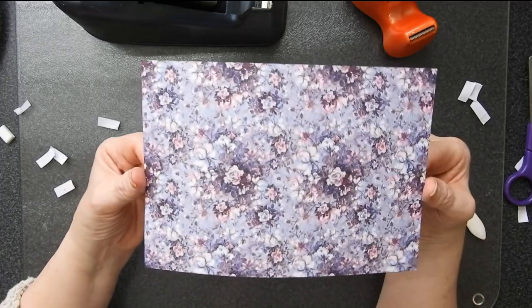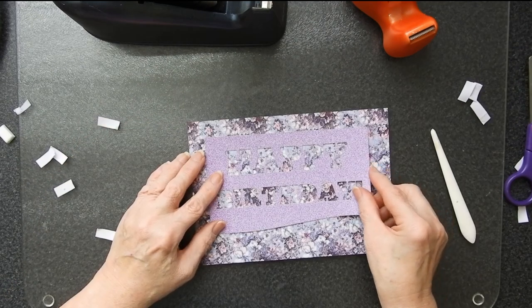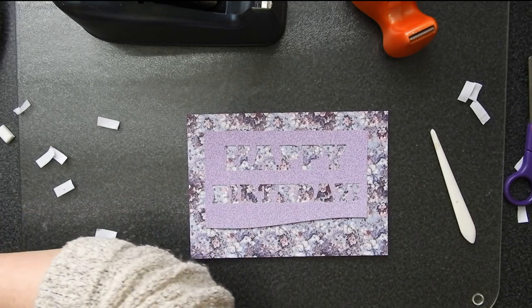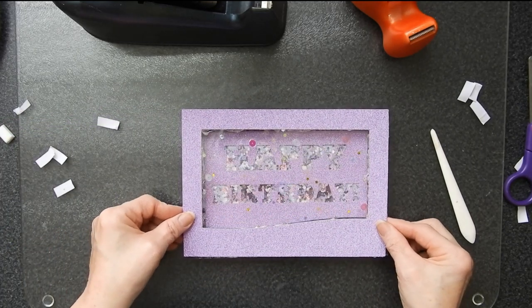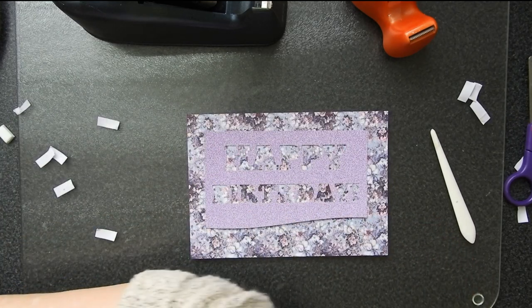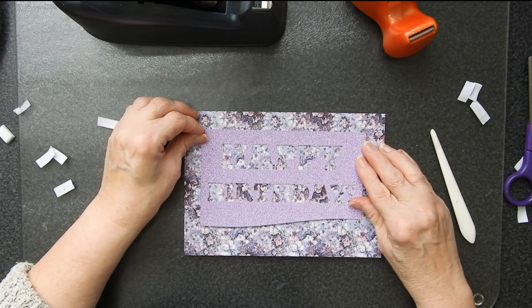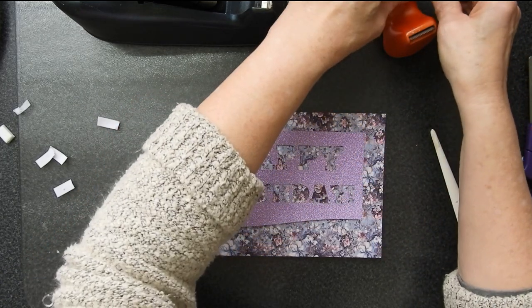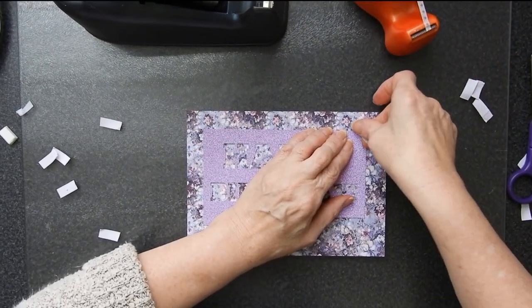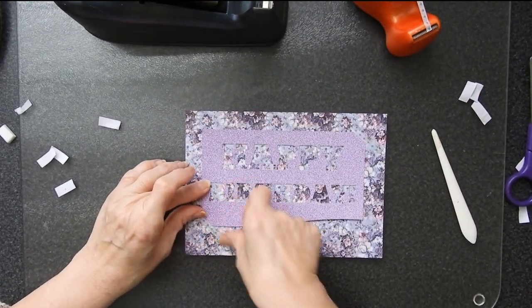So for the background of this one, I'm going to be using this rather pretty floral print. So I happen to know that that should go round about there. I'm just going to place this over the top. Yep, that is pretty much about right. And I'm just going to use a little bit of washi tape to stick this down for the moment.